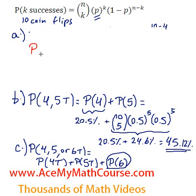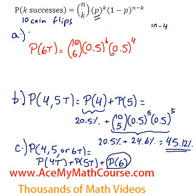So the probability of getting 6 tails from 10 coin flips will be 10 choose 6 times 0.5 to the power of 6 times 1 minus 0.5, which is 0.5 to the power of 4, the number of heads.